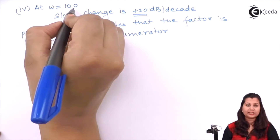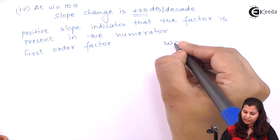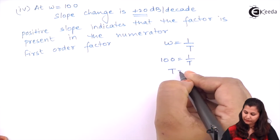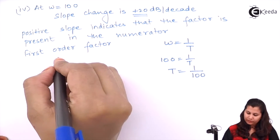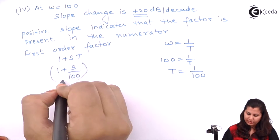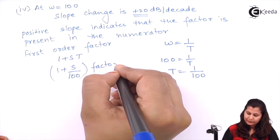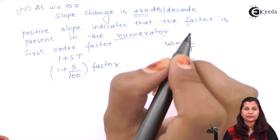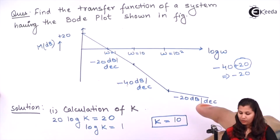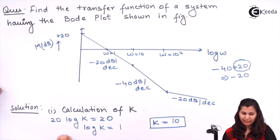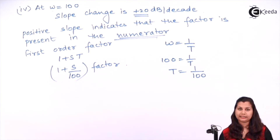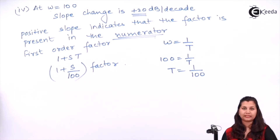The corner frequency is omega equals 100. If omega equals 1/T, then T equals 1/100. So we write the factor as 1 + sT = 1 + s/100. This first-order factor is present in the numerator of the transfer function.